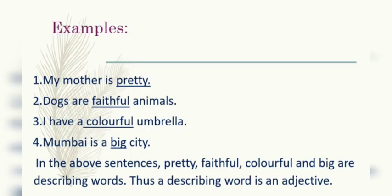Now examples: My mother is pretty. Dogs are faithful animals. I have a colorful umbrella. Mumbai is a big city. In the above sentences, the words pretty, faithful, colorful, and big are the describing words — they are adjectives. So these are the examples of adjectives.